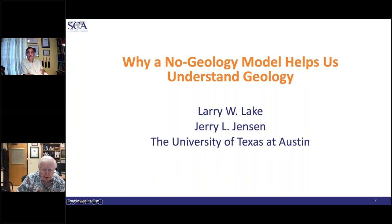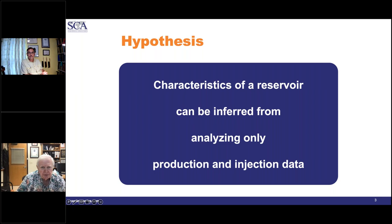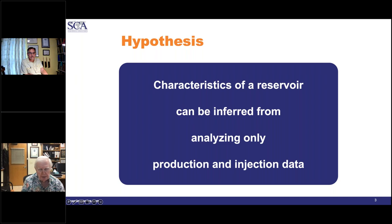This is and continues to be a research project, and like every good research project, it should have a hypothesis. The hypothesis is that the characteristics of a reservoir will largely be centered around the subject of connectivity — that reservoir characteristics can be inferred from analyzing only production and injection data. Most of the time that's production and injection rates, but sometimes we have bottom hole pressures as well. This comes in part from the experience that with legacy assets, there's virtually no data available except production and injection data.